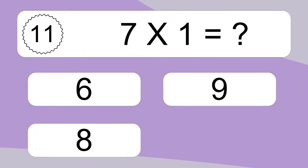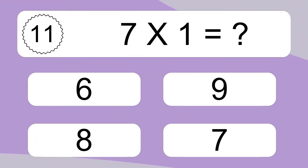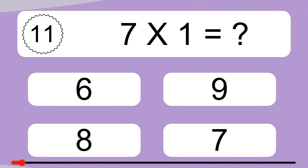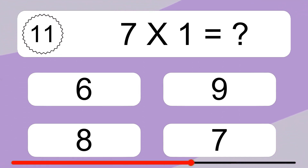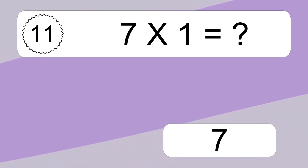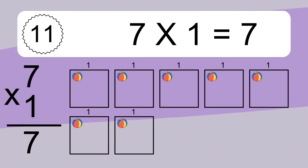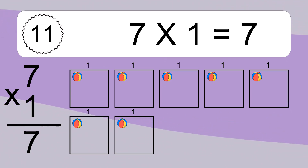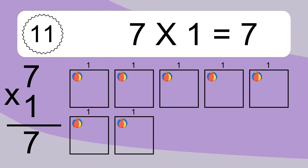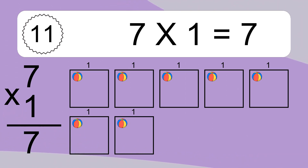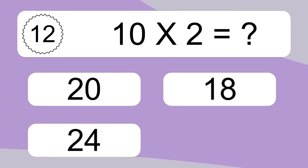7 times 1 equals what? 7 times 1 equals 7. We have 7 boxes, and each box has 1 colorful ball inside. If you count all the balls in all the boxes together, you will have 7 times 1 balls. This equals 7 balls.